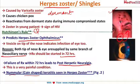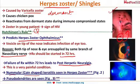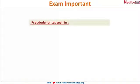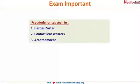Another form is nummular keratitis, characterized by coin-shaped opacities, seen in herpes zoster. In herpes zoster, you also see pseudodendrites rather than true dendrites. For quick revision: pseudodendrites are seen in three conditions — herpes zoster, contact lens wearers, and acanthamoeba.